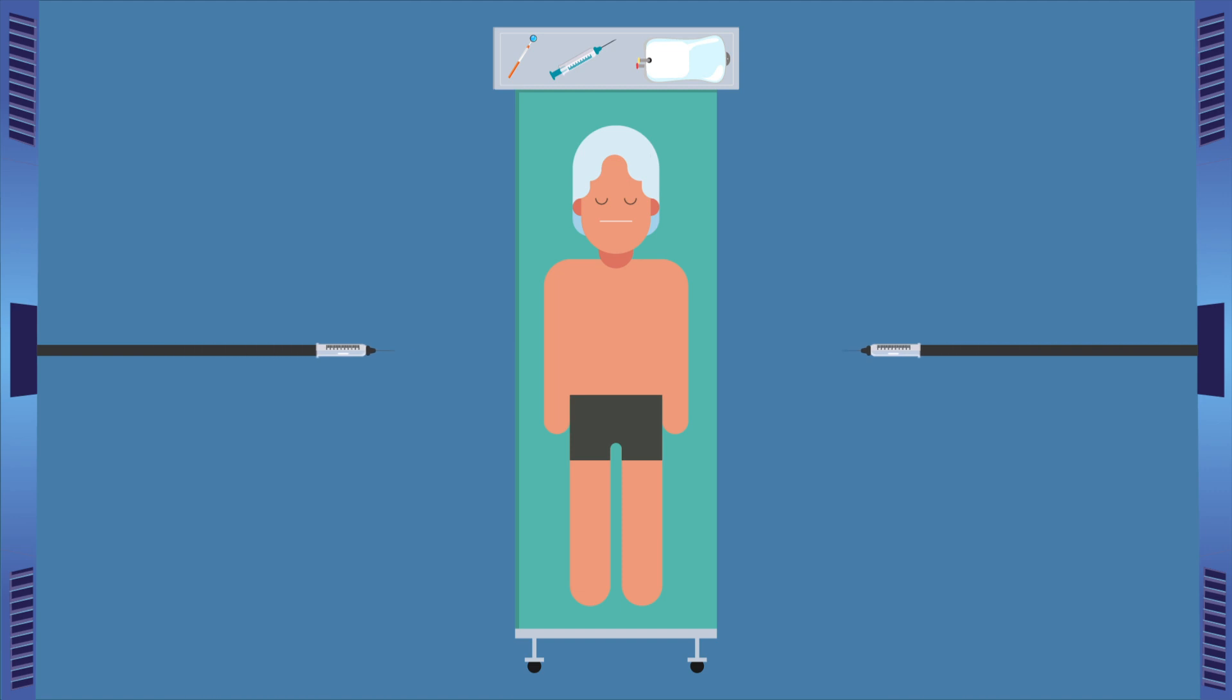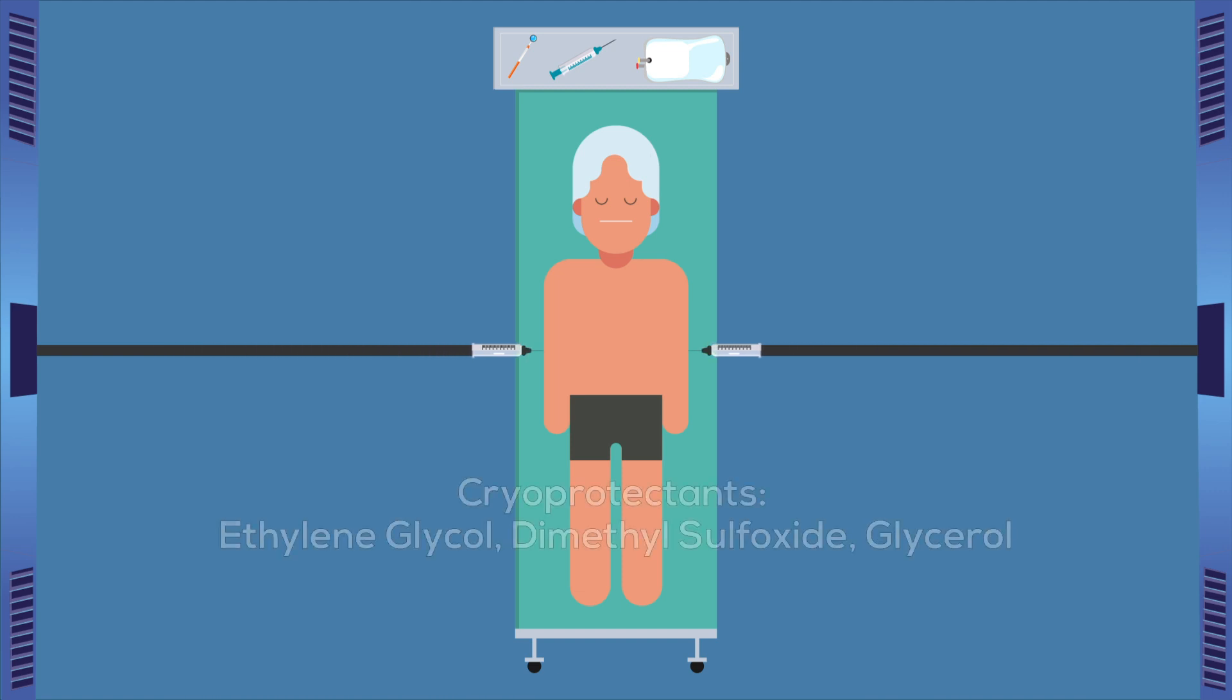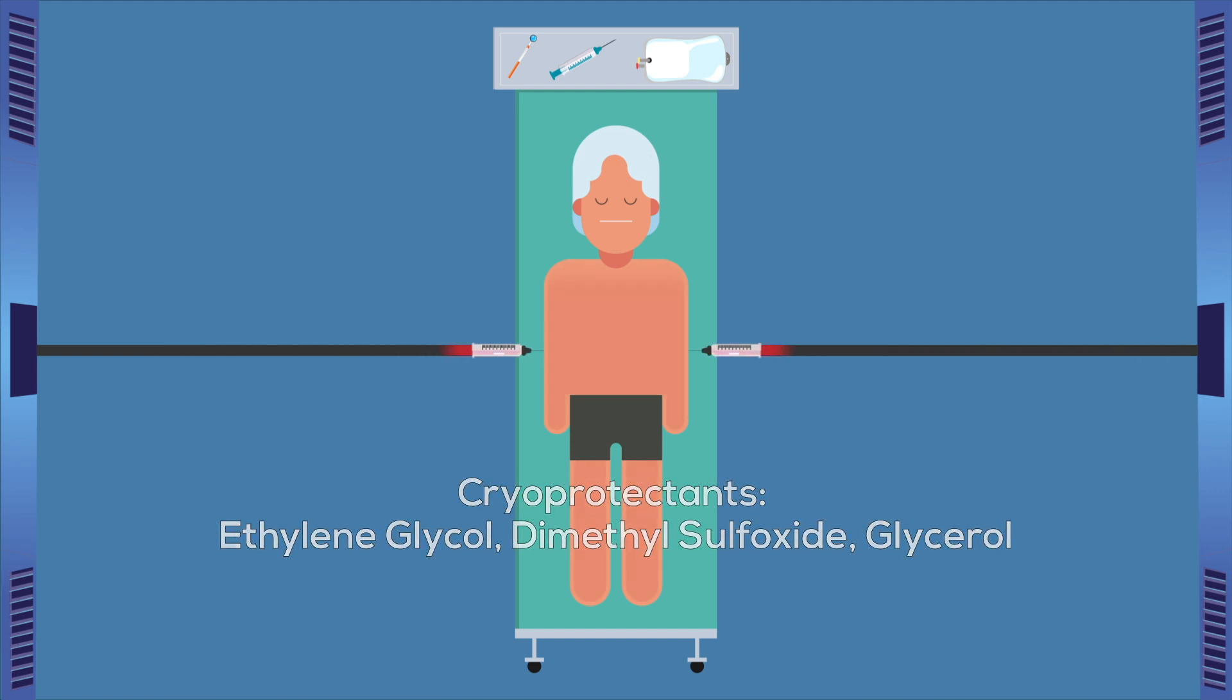Usually, to freeze a corpse, a cryoprotectant, also known as anti-freeze solution, is used to replace the blood in the body first. This prevents the formation of ice crystals that would otherwise damage the body's organs and veins.